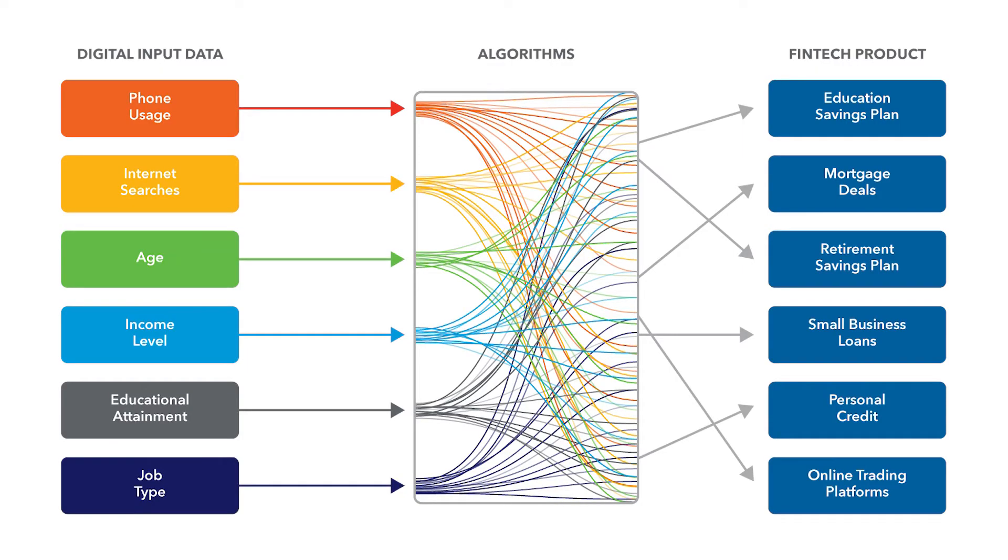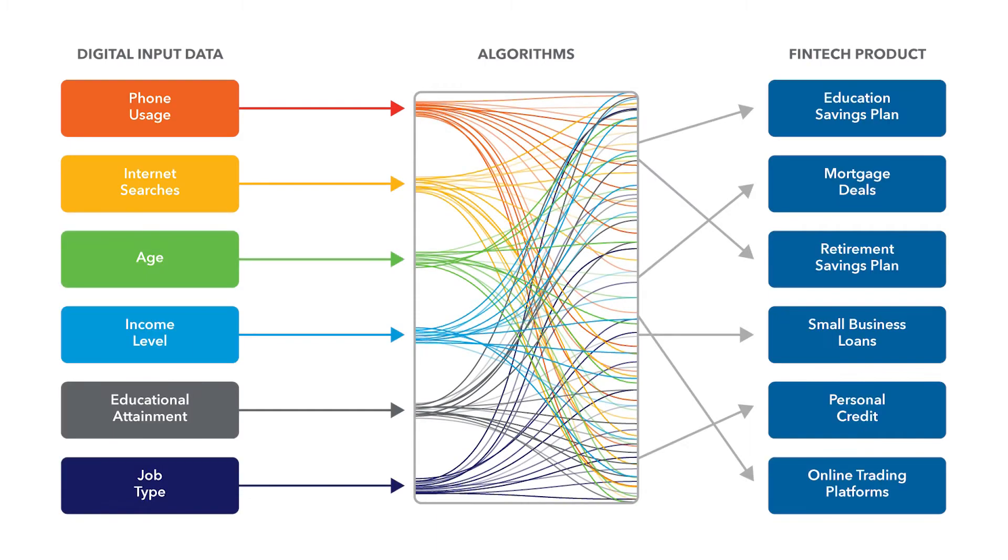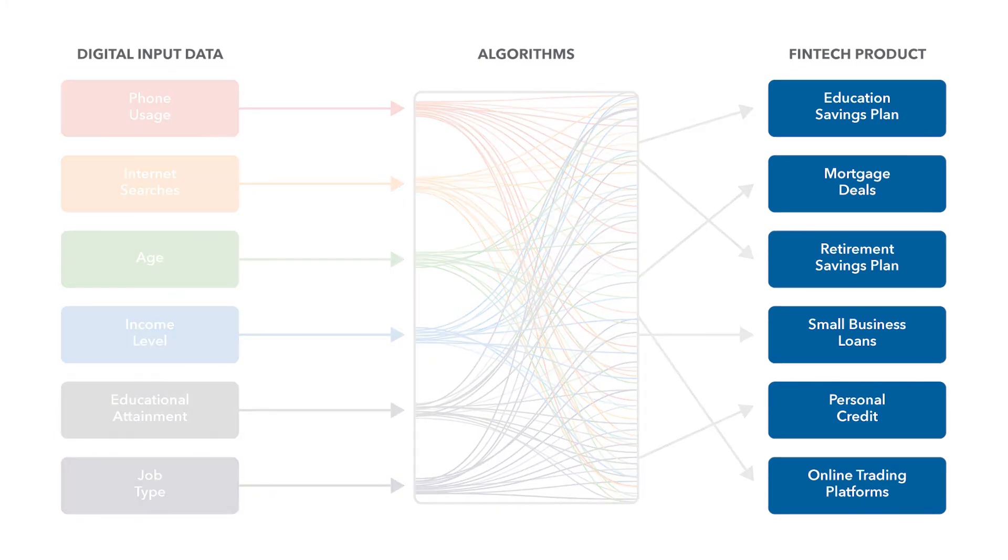For instance, algorithms including data from cell phone usage and contacts, internet searches, financial transactions, and ownership records are being used by FinTech firms to see which people may be potential low-risk borrowers or may be interested in various savings products.